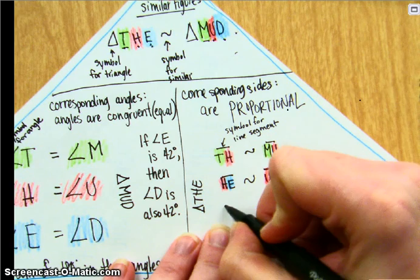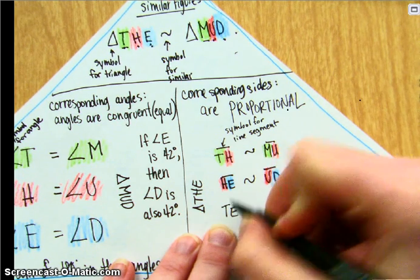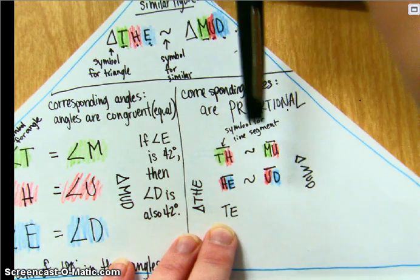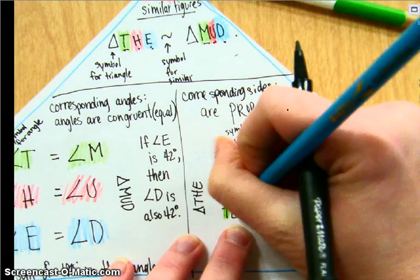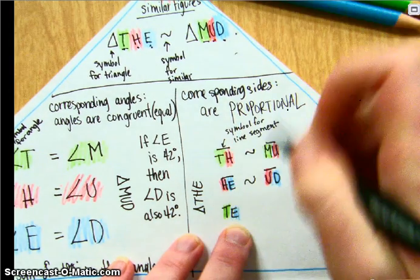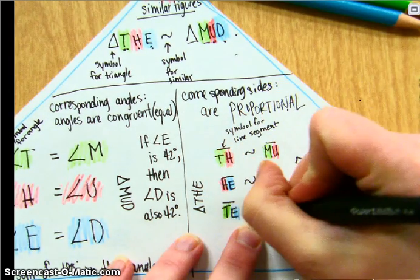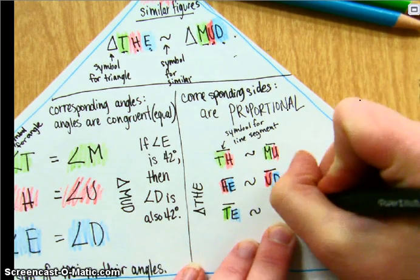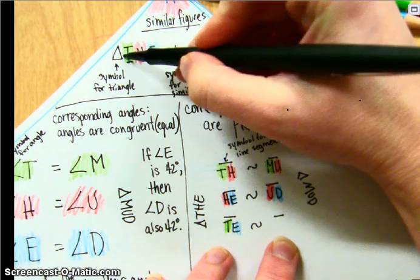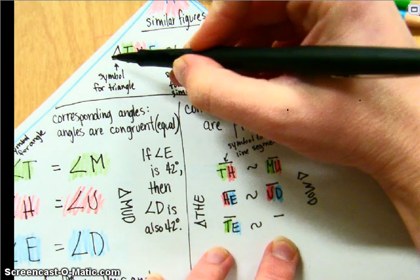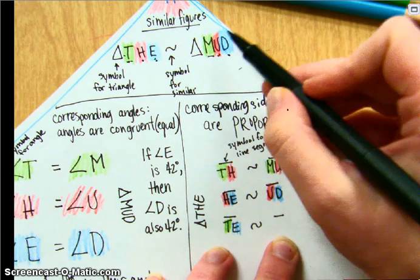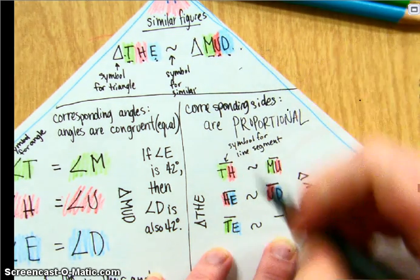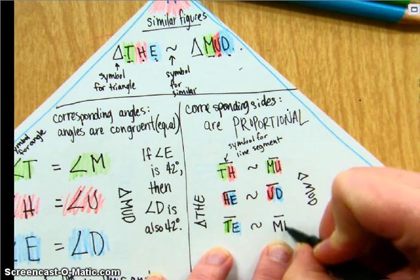Then line segment TE, so we're going from green to blue, and we need the line segment. Similar to line segment from first to third, or from first place to third place, from green to blue. Over here, first to third, green to blue, MD.